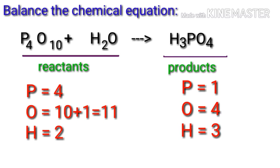If we look at this equation, we can see that the equation is not balanced. In the reactant side, there are four phosphorus atoms, 11 oxygen atoms, and two hydrogen atoms. On the product side, there is one phosphorus atom, four oxygen atoms, and three hydrogen atoms.